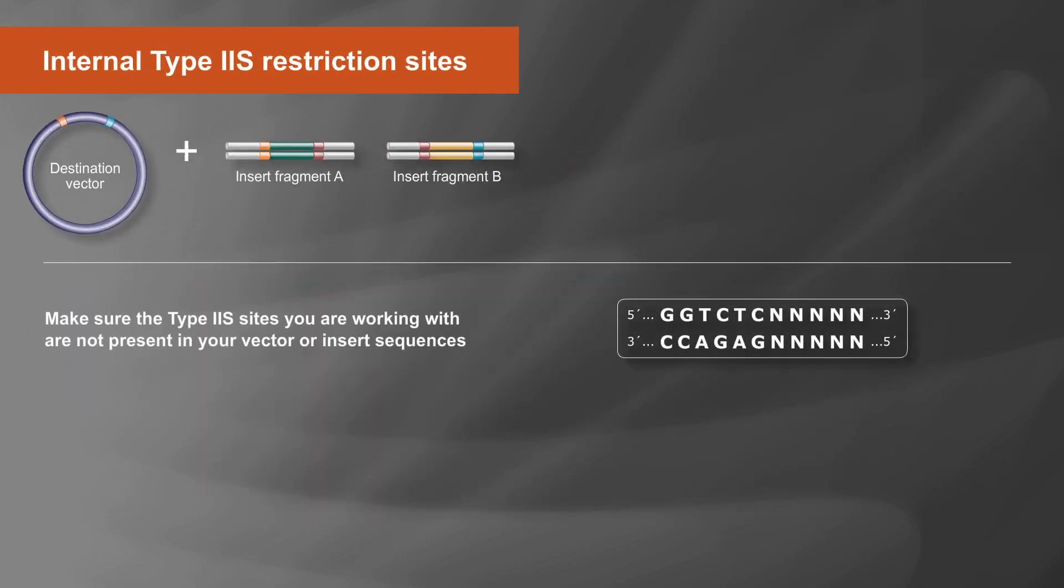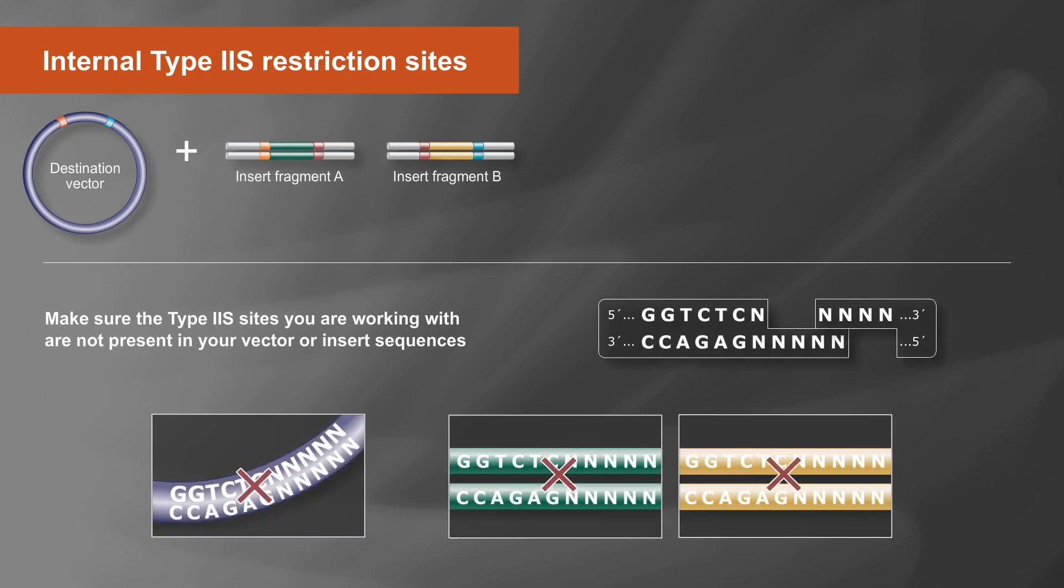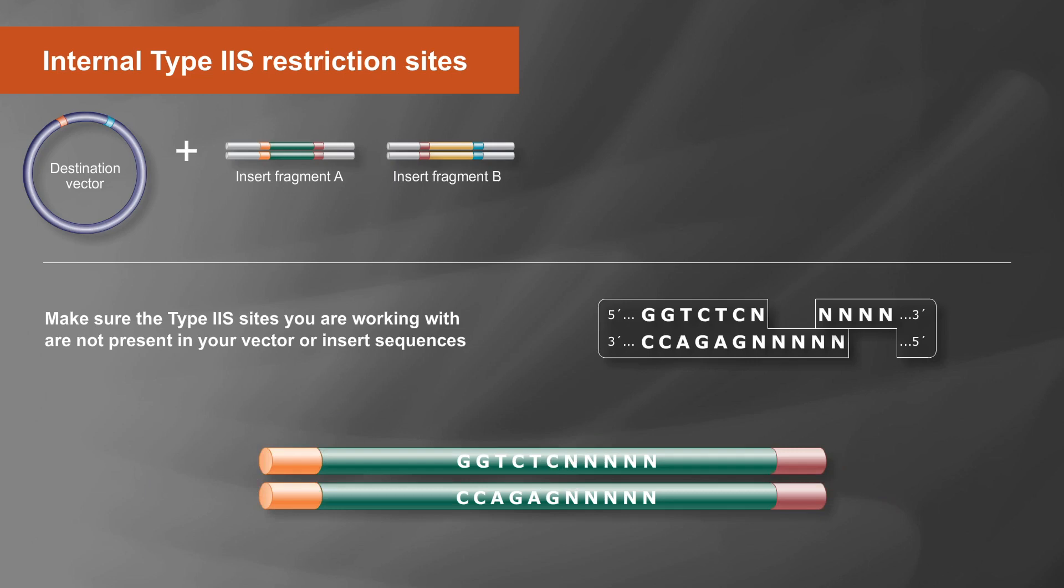It's important to make sure the type 2S recognition sites that you are working with are not present in either your vector or insert sequences, excluding, of course, where needed to create the desired fusion sites. If internal sites are present, the enzyme will cut the DNA in your final assembly, leaving you with linear DNA that doesn't transform.